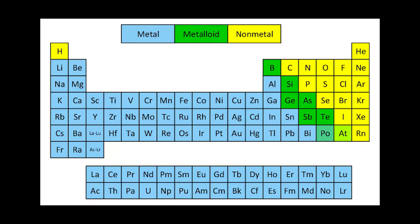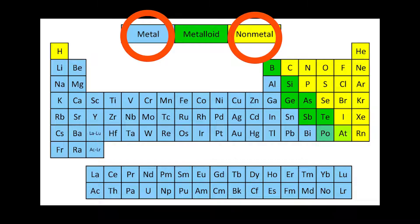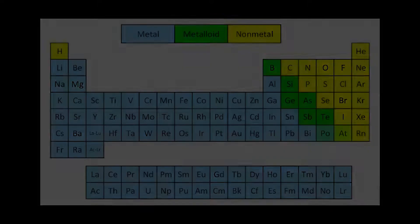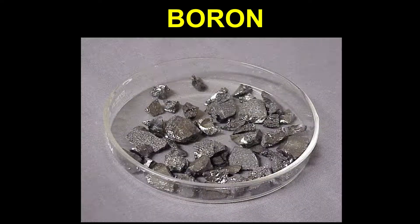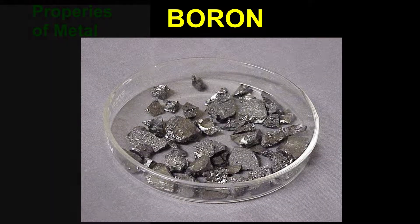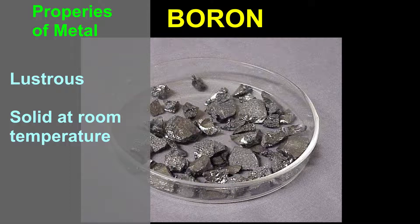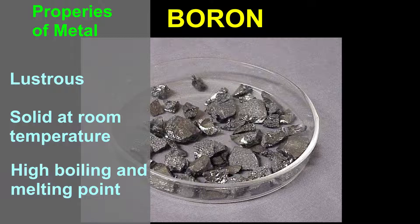The elements which exhibit the properties of metals as well as non-metals are called metalloids. Boron is a metalloid. Similar to metals, it is lustrous in look and solid at room temperature. It also has very high boiling and melting point.